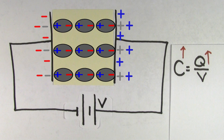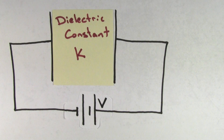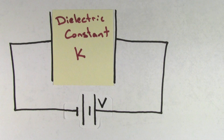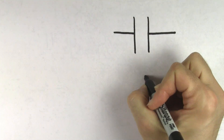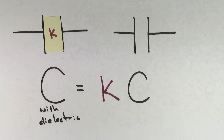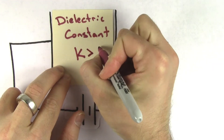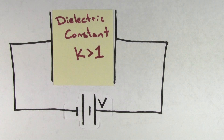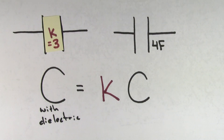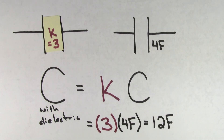To figure out how much you've increased the capacitance, you just need to know what's called the dielectric constant of the material that you've inserted between the capacitor plates. The dielectric constant is often represented with a Greek letter kappa or simply a K. The formula is simple: if the capacitance of a capacitor before inserting a dielectric was C, then the capacitance after inserting a dielectric is just k times C. Since a dielectric always increases the capacitance, the dielectric constant k for a non-conducting material is always greater than one. For example, if a capacitor has a capacitance of four farads and you insert a dielectric with dielectric constant three, the capacitance will become 12 farads.